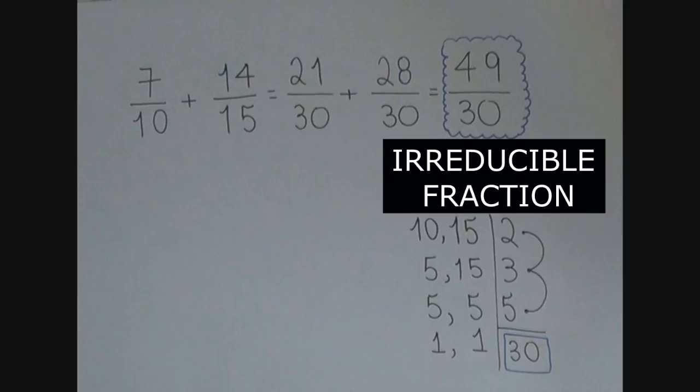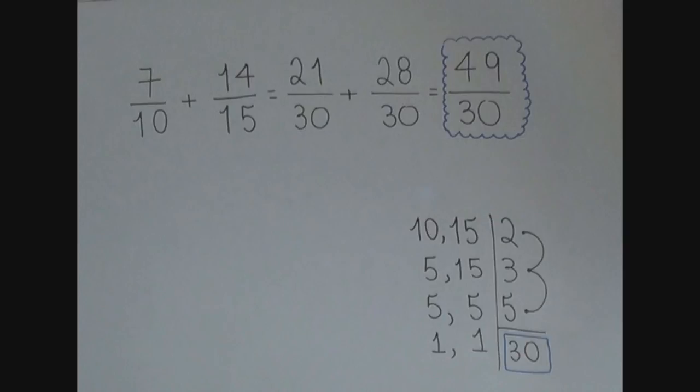No. This fraction is already reduced, since its numerator and denominator have no common factors. 7 over 10 plus 14 over 15 equals 49 over 30.